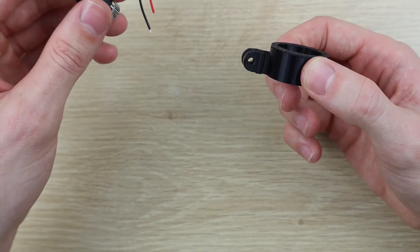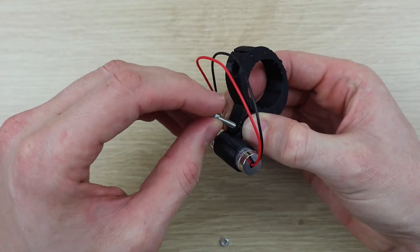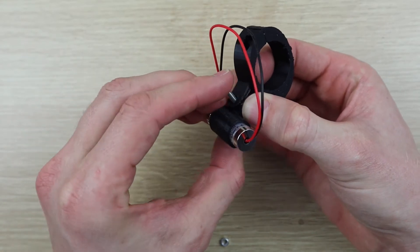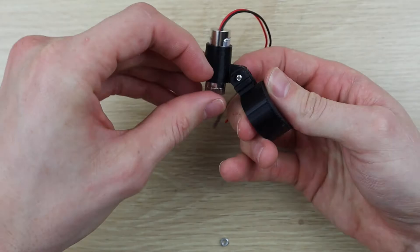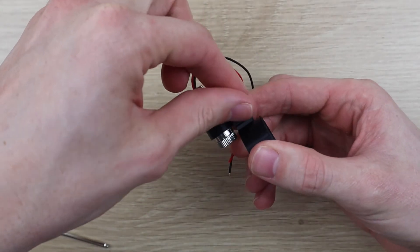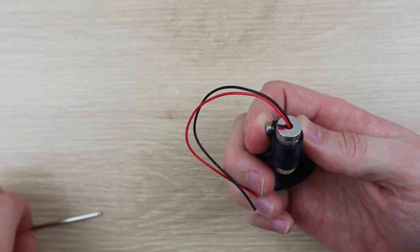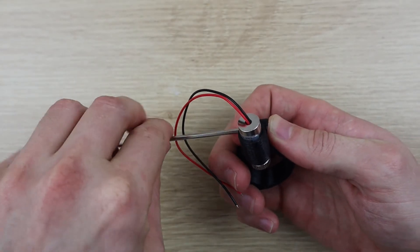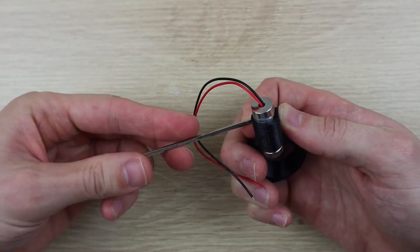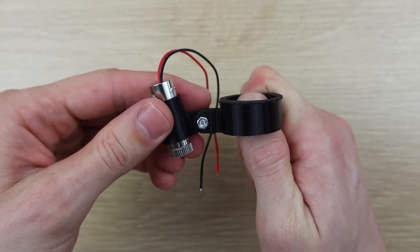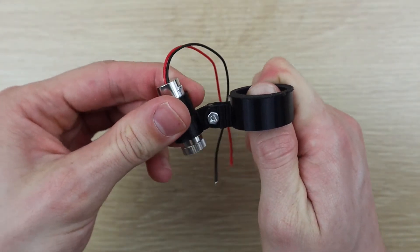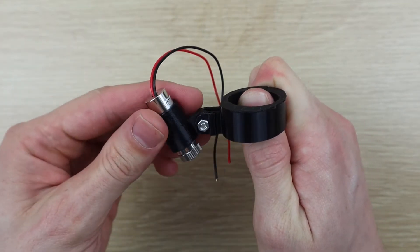Now screw the laser holder onto the main bracket using an M3 x 15 hex head screw. This screw allows you to adjust the angle of the pointer in order to line it up with the laser at different heights and different focal points.